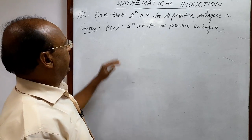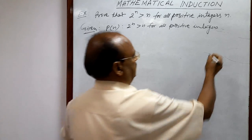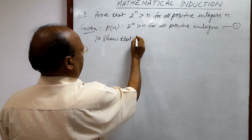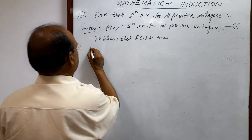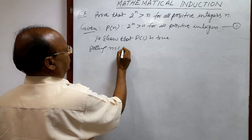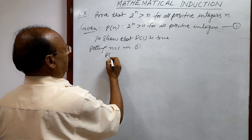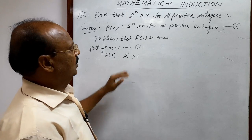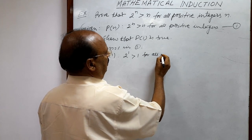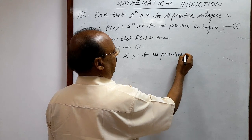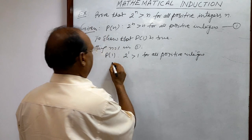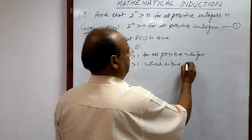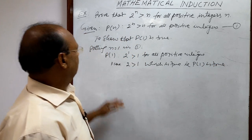First step: we have to show that P(1) is true — let us call the original statement relation number 1. Putting n equal to 1, P(1) is: 2 to the power 1 is greater than 1, which gives us 2 is greater than 1. This is true. So our first step is complete.